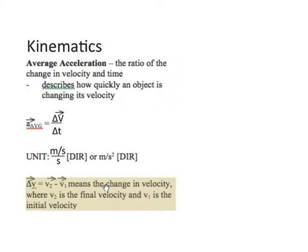Delta V. What does it mean? Well, it means the change in velocity, where V2 is the final velocity and V1 is the initial velocity. Now, for there to be a change in velocity, either the speed of the object could change, or the direction, or both.